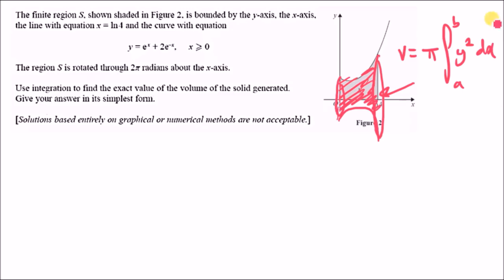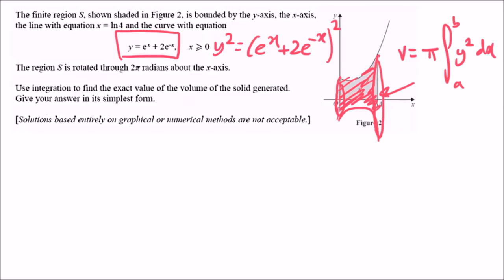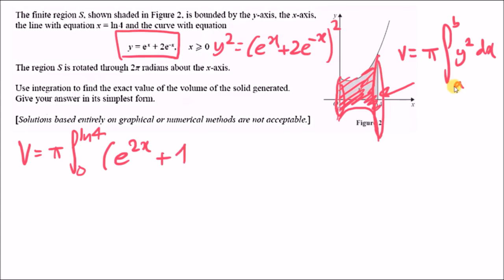Expanding y squared: (e to the x plus 2e to the negative x) squared gives e to the 2x plus 2 times e to the x times 2e to the negative x plus 4e to the negative 2x. The middle cross terms: e to the x times e to the negative x cancel to give 1, so 2 times 2 times 1 equals 4. So y squared equals e to the 2x plus 4 plus 4e to the negative 2x.